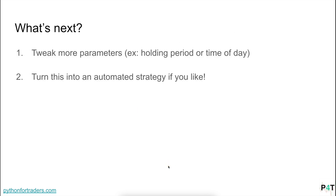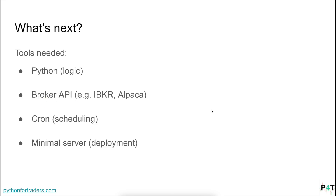You might be wondering what's next. We can always try to tweak more parameters — looking at different holding periods or time-of-day effects. And of course, you can actually turn this into an automated strategy. You really don't need that many tools: just Python for the code, a brokerage API such as Interactive Brokers or Alpaca, a scheduling tool like Cron to make sure it buys on the 1st and the 15th and sells the next day, and a minimal server — even a Raspberry Pi — for deployment.